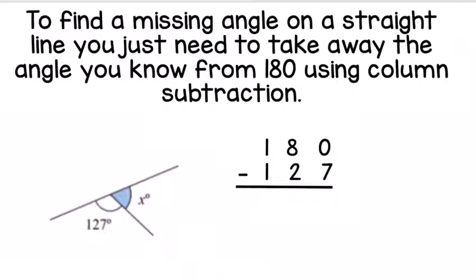Let's look at this example together. We have our straight line, we know that one of the angles is 127 degrees, and we need to find the missing angle. To do this, all we need to do is 180 take away the angle we already know, which is 127.